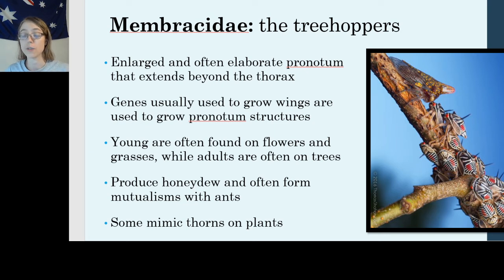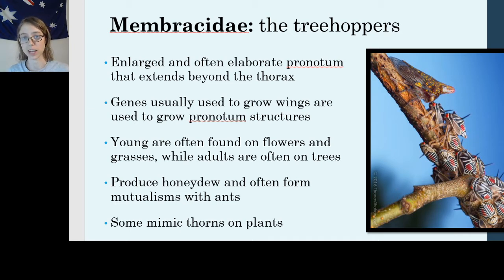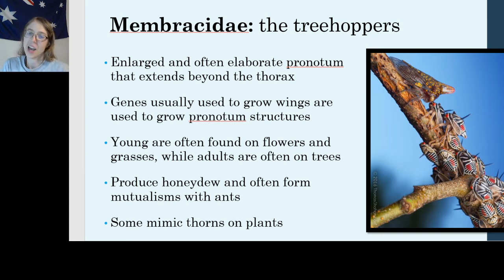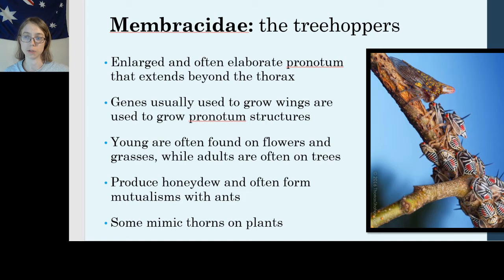The treehoppers are unique because they have an enlarged and often very elaborate pronotum that extends beyond their thorax. The pronotum is a plate on the back of an insect's thorax — it's one of many plates that make up the thorax. In most insects this plate is flat, lying flush against the insect's back. But in treehoppers, the pronotum is enlarged and extends sometimes beyond the length of the abdomen itself.